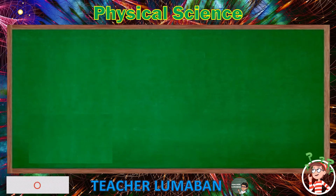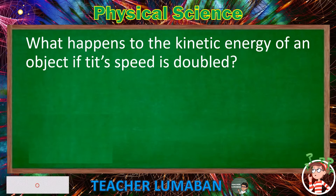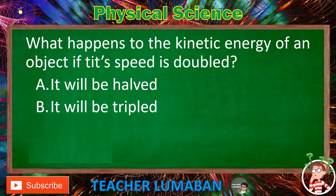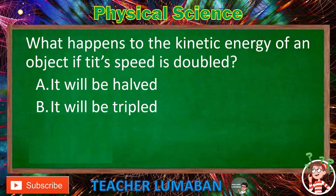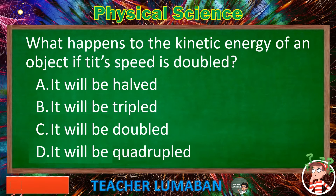What happens to the kinetic energy of an object if its speed is doubled? Letter A: It will be halved. Letter B: It will be tripled. Letter C: It will be doubled. Letter D: It will be quadrupled.